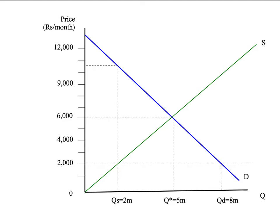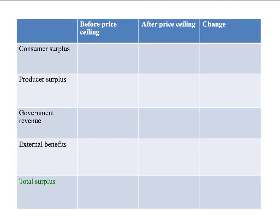Here's our demand and supply curve with all relevant prices, quantities, and construction lines. The relevant areas are labelled: triangle A at the top, rectangle B, triangle C, and so on through to area M. I'll set up a table with consumer surplus, producer surplus, government revenue, external benefits, and total surplus as rows, and columns for values before the price ceiling, after the price ceiling, and any change.